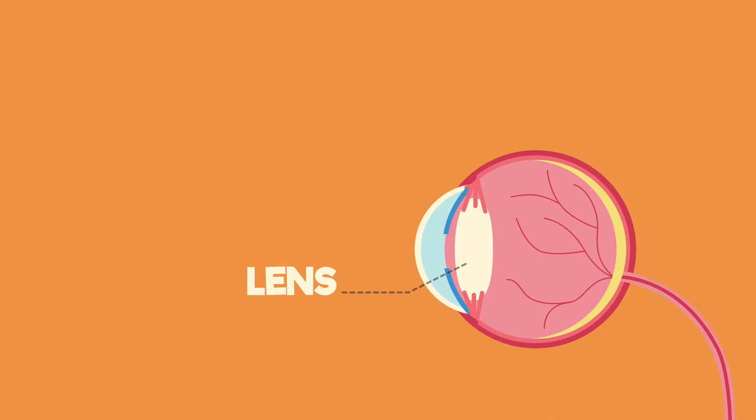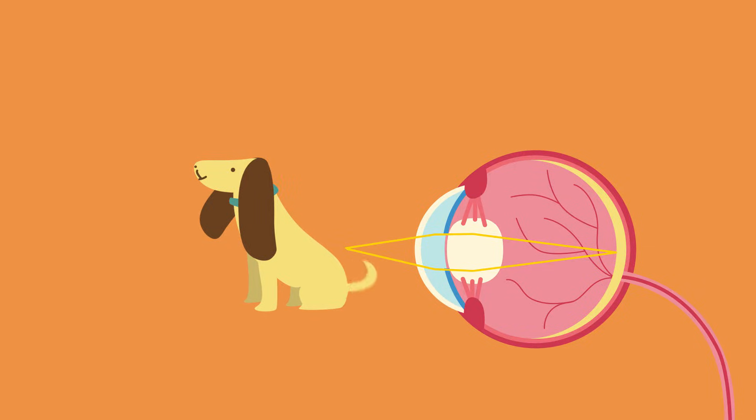The lens is a transparent biconvex flexible structure that focuses light into the retina. If we want to see something close, the lens is made to be thicker and when we want to see something further away, the lens is made to be thinner. These changes increase or decrease the refraction of incoming light onto the retina.